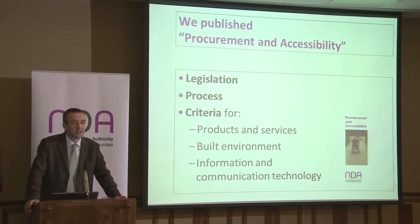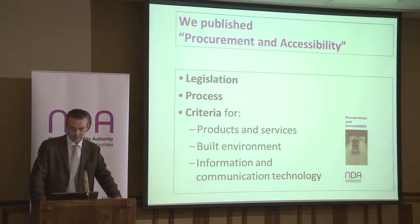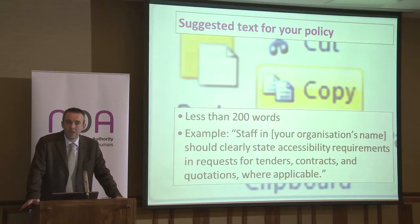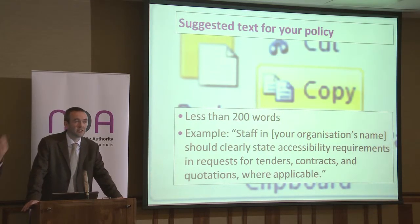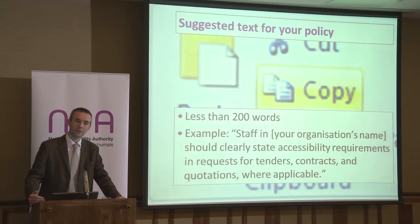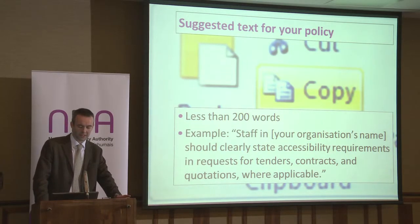So we published a document called Procurement and Accessibility. It discusses the legislation quite briefly, goes into the process in quite a lot of detail, and has a whole lot of copy-and-pasteable criteria for things like products and services, built environment, and information technology. One of the first things in there is suggested text for your policy — your public body probably has a procurement policy that possibly doesn't mention the Disability Act 2005, and it definitely should. We've got it down to less than 200 words. You can copy and paste it, put it into your own procurement policy, and you'll be using text we're fairly sure is correct.